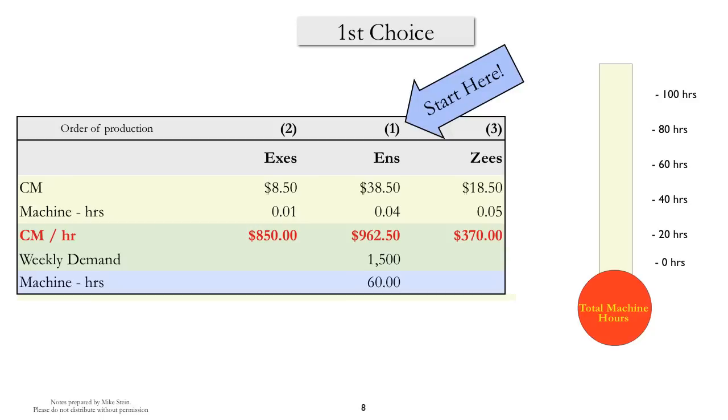This tells us that N's are the most profitable product when we consider them on a machine hour basis. So our first choice is to make 1,500 N's, and this requires 60 machine hours. So we still have 45 machine hours left.